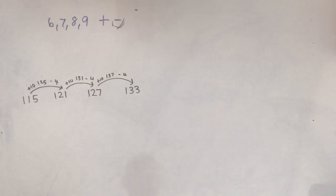When adding 7 is also very similar, but instead of minusing 4, you minus 3. So 115 add 10 is 125, minus 3 takes you to 122. 122 add 10 is 132, minus 3 is 129.